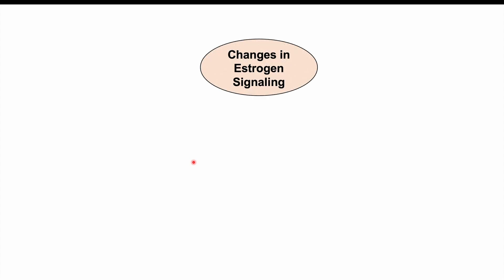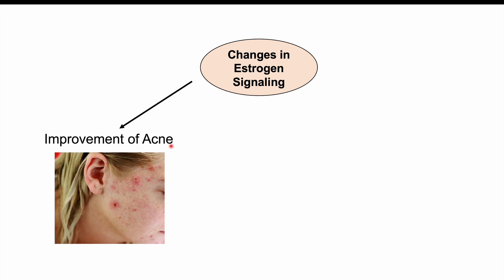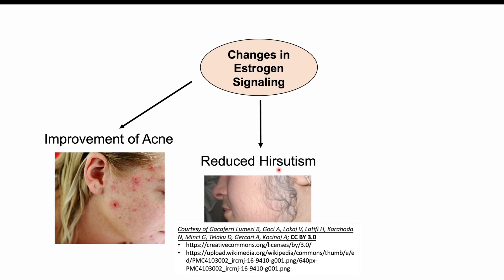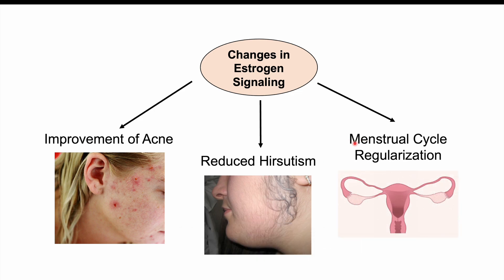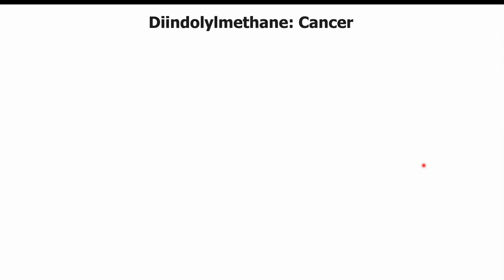Regarding PCOS, we don't have large trials looking at the effects of DIM, but we do have some evidence from smaller studies, especially case reports. That data shows that changes in estrogen signaling from DIM use can improve acne, reduce hirsutism or unwanted hair growth, and improve menstrual cycle regularization. Not very strong significant data, but there is some evidence suggesting DIM can help with these signs and symptoms of PCOS.